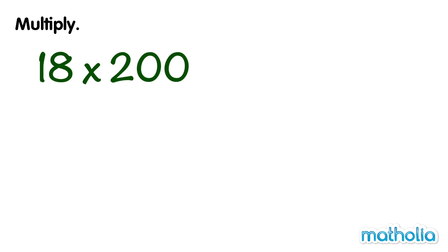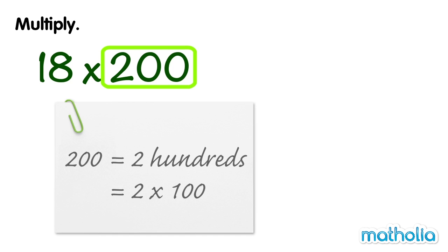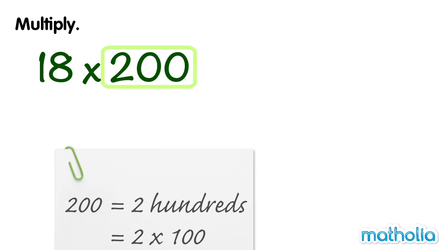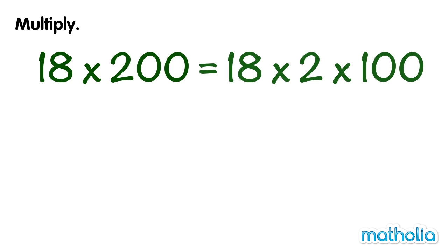Multiply 18 by 200. 200 is equal to 2 hundreds, which we can write as 2 times 100. So 18 times 200 equals 18 times 2 times 100. 18 times 2 equals 36.